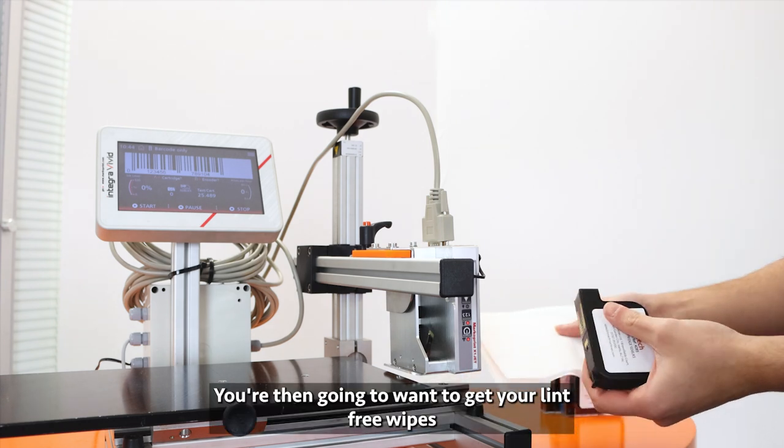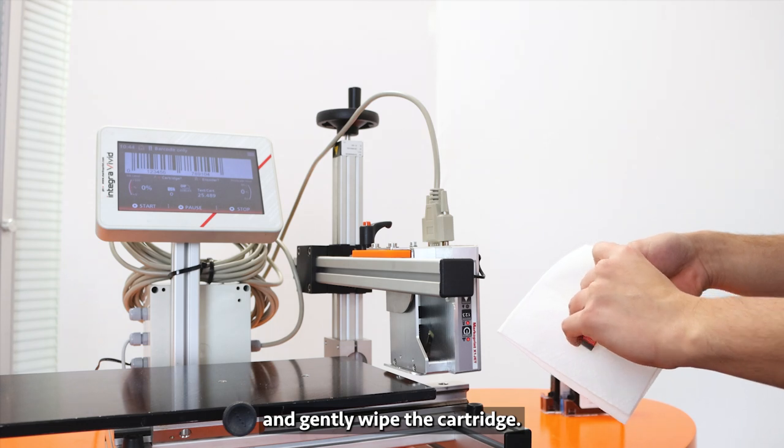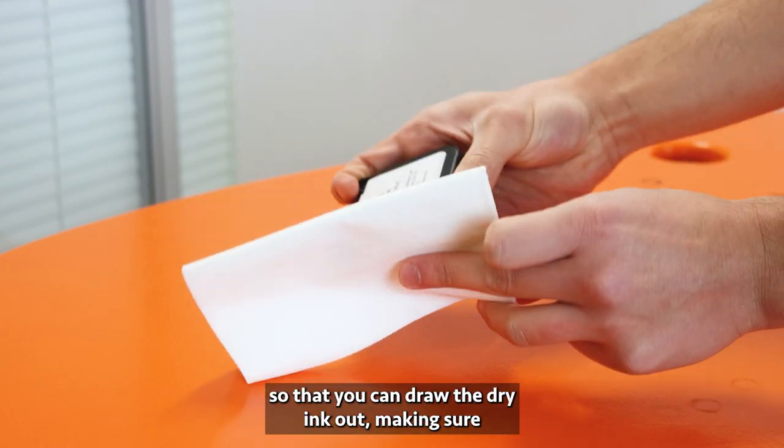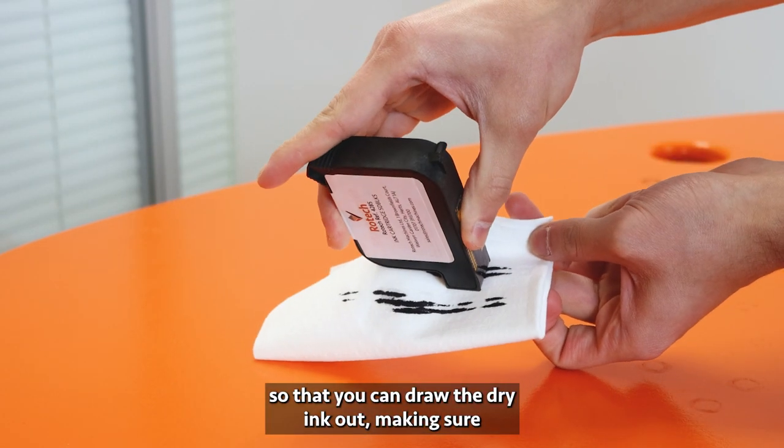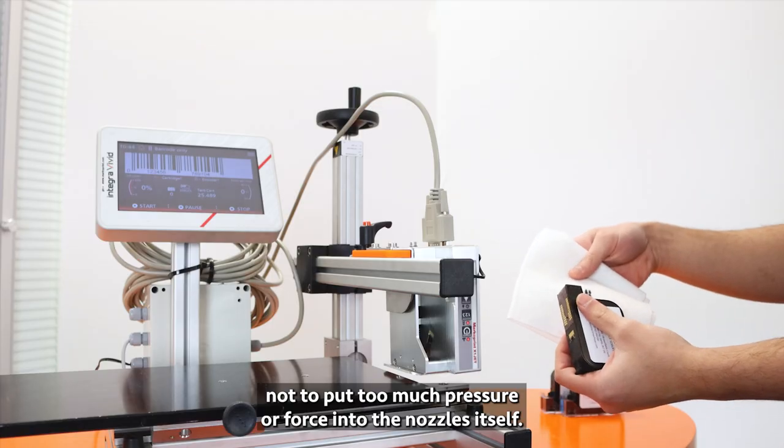You're then going to want to get your lint-free wipes and gently wipe the cartridge. All you want to do is apply a bit of pressure to the nozzles so that you can draw the dry ink out, making sure not to put too much pressure or force into the nozzles itself.